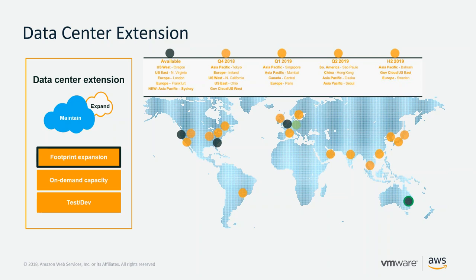We recently announced our first Asia-Pacific region — the Sydney region. Now Asia-Pacific and multinational customers can rapidly deploy VMware Cloud on AWS in that region. This brings our service to US, Europe, and Asia-Pacific markets, increasing total availability to five regions in the past 12 months.